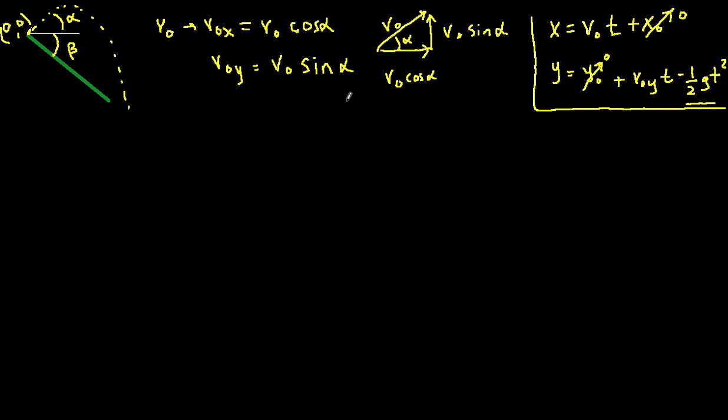So let's just rewrite those equations. So we have x equals v-naught, and I'm going to substitute in the values for the angle, cosine alpha times time, and we have y equals v-naught sine alpha times time minus one-half gt squared.